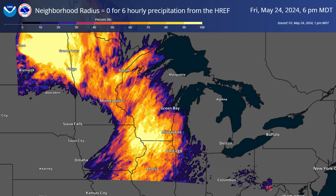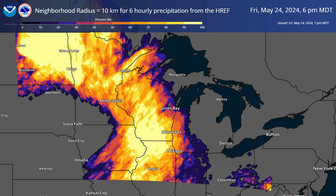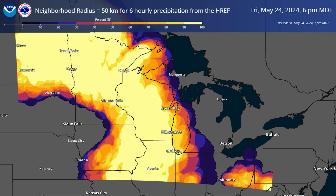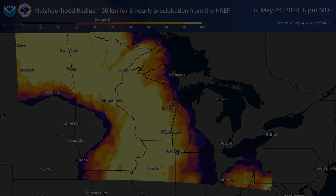Within DESI and using the HREF data, you have the ability to change the neighborhood probability radius between 0, 10, 25, and 50 kilometer radius. At the same time, you have the ability to set the time range and the amount of precipitation to look at. For the following examples, we will look at a 6-hour precipitation graphic and amounts greater than or equal to one quarter of an inch.